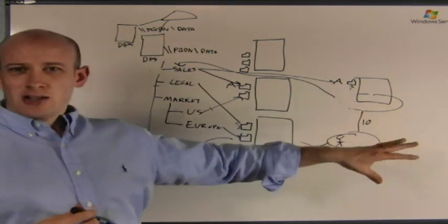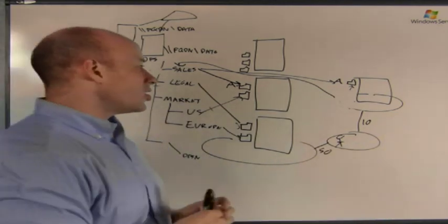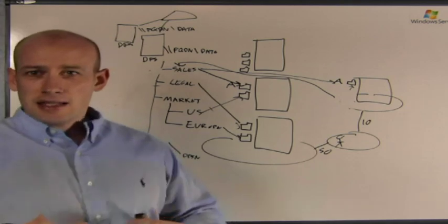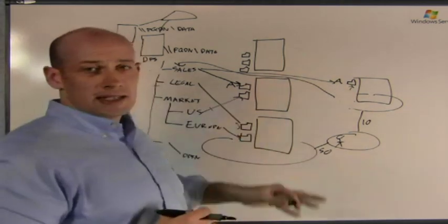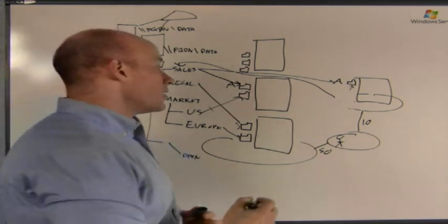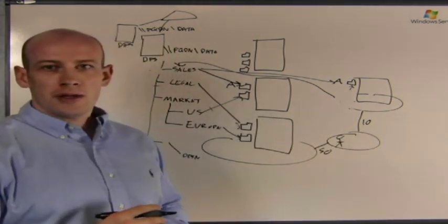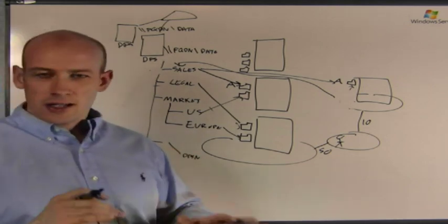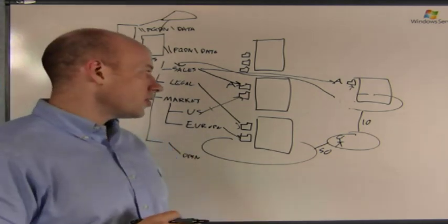Another mode is to not use those site costings because it gets more complex. Essentially it will redirect you to a copy of the data in your local site. If there isn't one in your local site it will just randomly select one. Then there's an in-site only option, so essentially if there's not a copy in my location it won't give me any access to the data at all. Generally that's not used too much unless you've got very big concerns over the wide area network bandwidth usage.